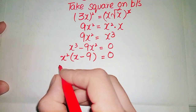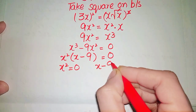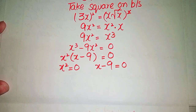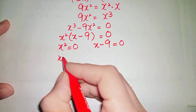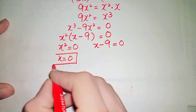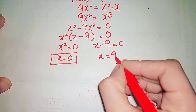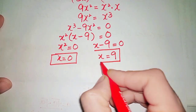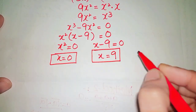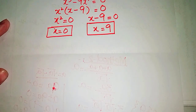From the factored equation, we get two values for x: x squared equals 0 giving x equals 0, and x minus 9 equals 0 giving x equals 9, since the negative 9 moves to the right side and becomes positive 9.